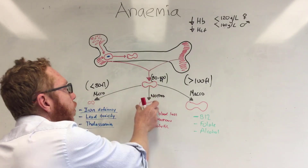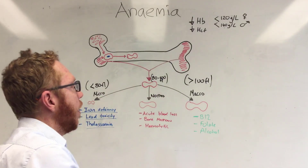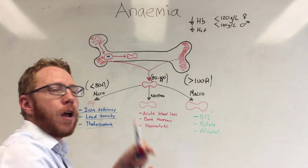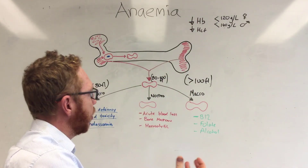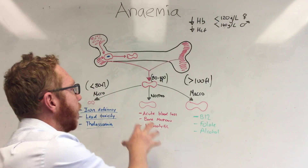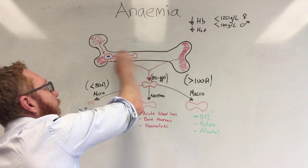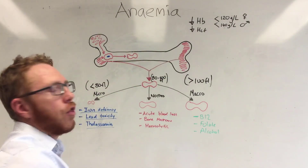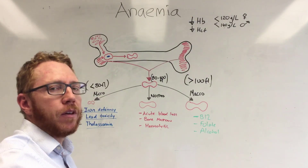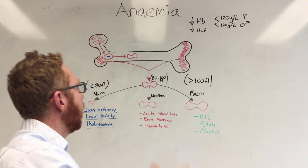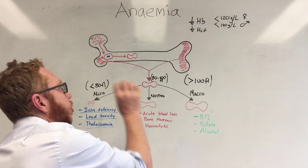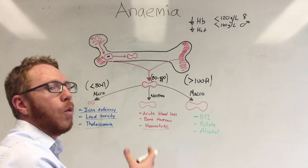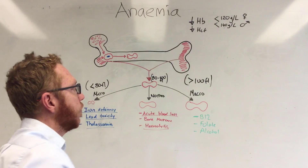When we have a normal-sized red blood cell but reduced hemoglobin, it could be caused by either a production issue or a destruction issue. A production issue involves a problem in the bone marrow, such as leukemia or aplastic anemia. A destruction issue could be something like hemolytic anemia or acute blood loss.